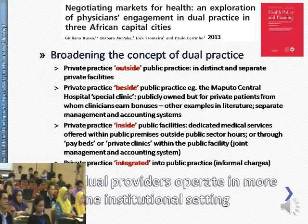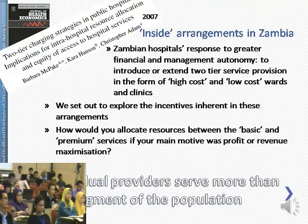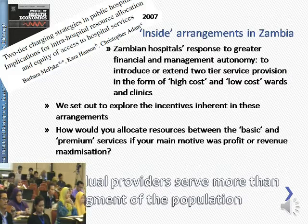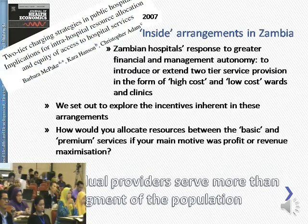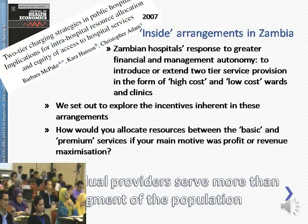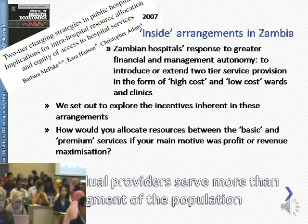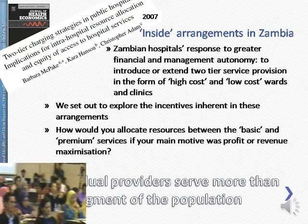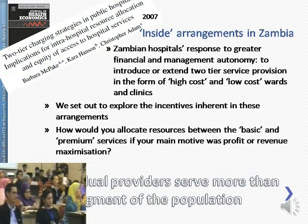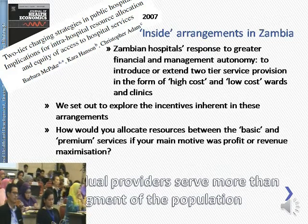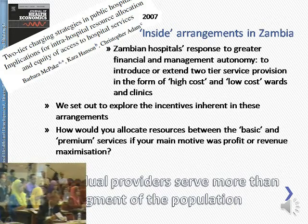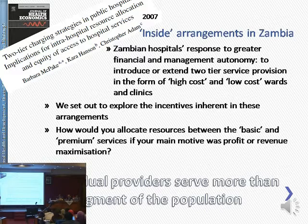Returning to Zambia: that earlier data from Ketui General Hospital showed a high-cost service at nearly 300,000 kwacha and a low-cost service at about 10,000 kwacha. This was because Zambia's hospitals, responding to greater financial and management autonomy, introduced or extended two-tier service provision in the form of high-cost and low-cost wards and clinics. We were interested in the incentives within those arrangements — specifically, if your main motive is to generate profit or revenue within an integrated management and accounting system, how would you allocate resources between the basic and the premium service?